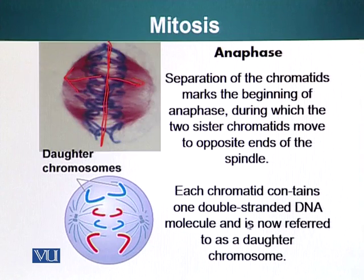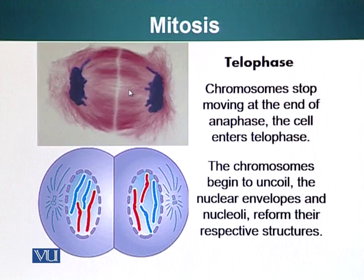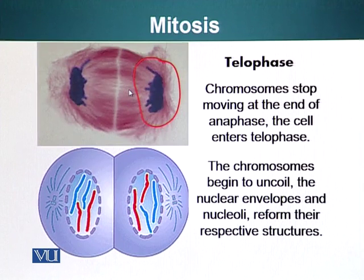Ultimately we will see in the next stage a furrow forming, which will result in splitting of the cell. In telophase, the chromosomes have arrived at the poles. The next stage, cytokinesis — the division of the two cells — has also started. You can see this furrow forming in animal cells.